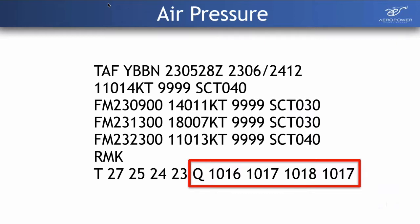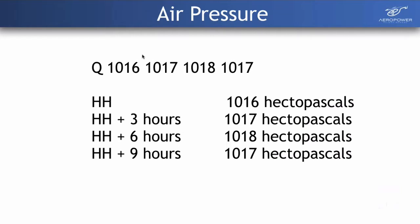Air pressure works in a very similar way. The Q here is for QNH — we call it altimeter setting — and this is the setting aircraft use so we're all flying off the same reference datum in terms of altitude. It works the same way as temperature: the first number is the pressure at the airfield when the forecast first becomes valid, then each three hours after that.